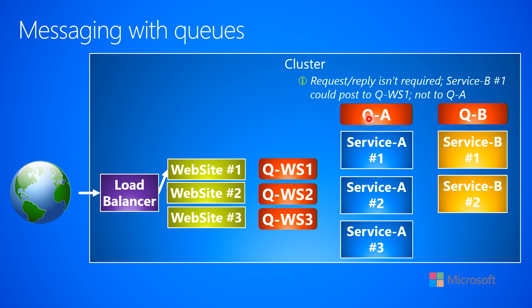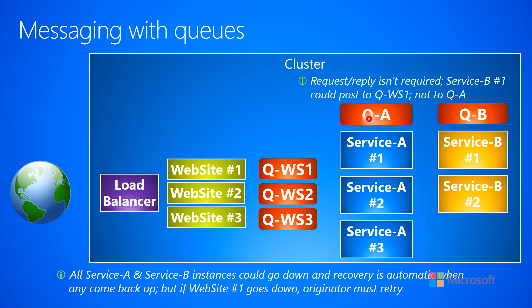Now that service A queued it up to the queue for website number one, website number one periodically pulls its queue, sees that there's a response, knows which client request this is a response for, and so the arrows rewind all the way back out — the client has ultimately gotten a response. Also, all service A and service B instances could go down simultaneously, and when they come back up, recovery would simply be automatic because they would just start pulling things from the queues and continue processing again. But notice that if website number one goes down, then the originator would have to start retry operations again — that's the benefit of using message queues as opposed to doing networking communication.